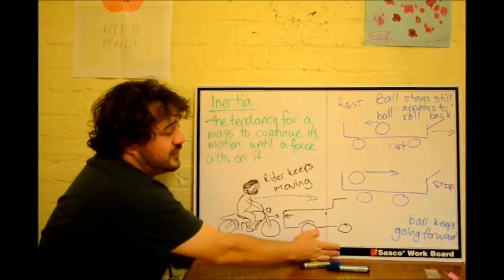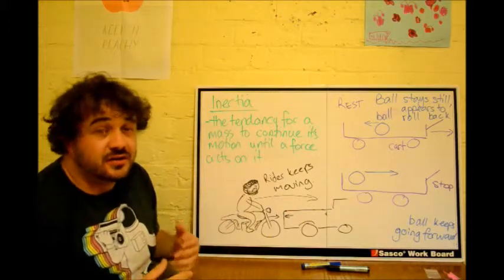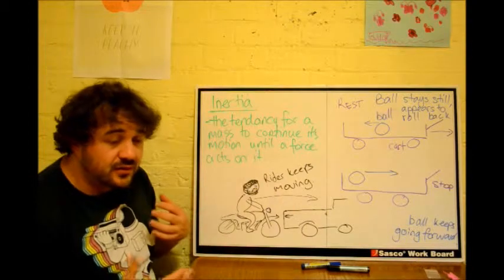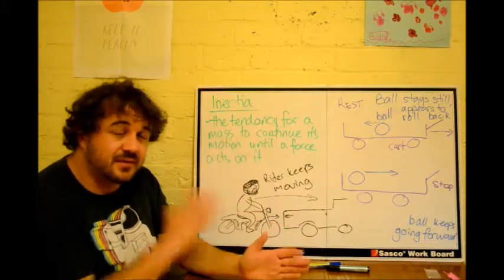Okay, now inertia is kind of a big deal. So basically inertia, the first law of motion, is the tendency for an object to continue doing what it's doing unless something makes it do otherwise.